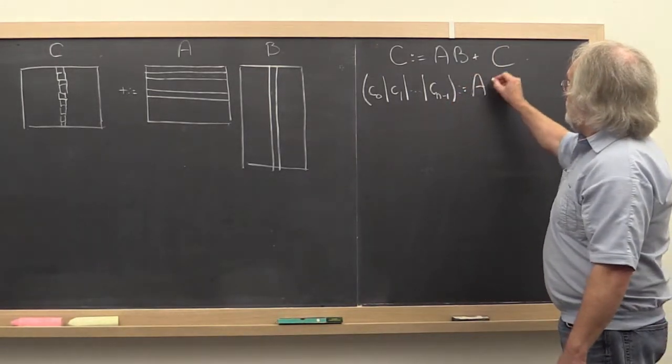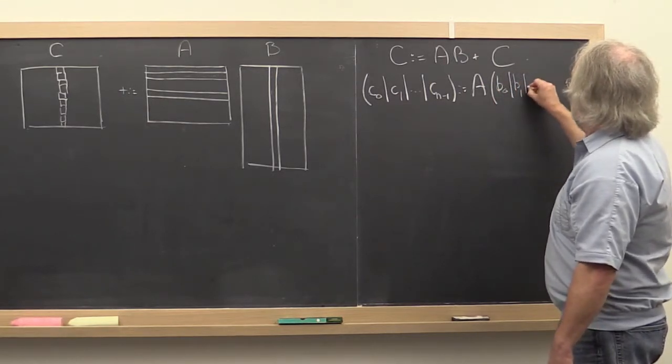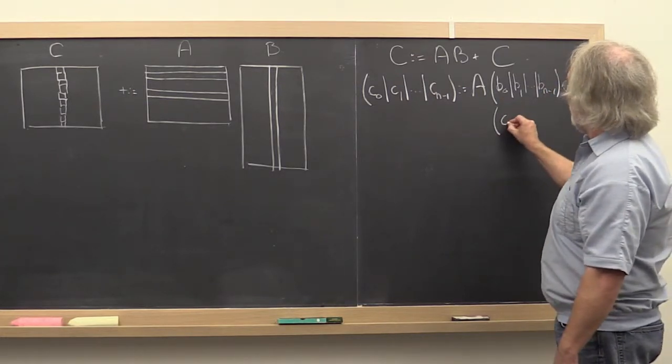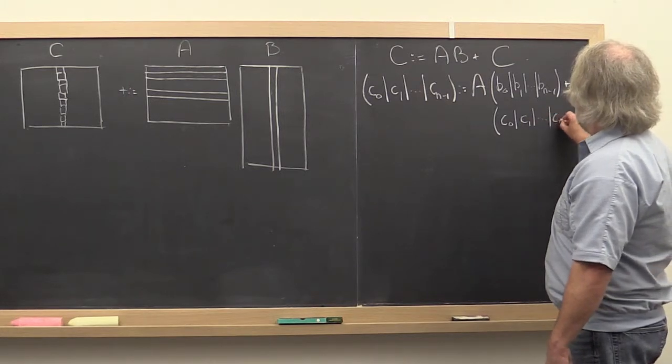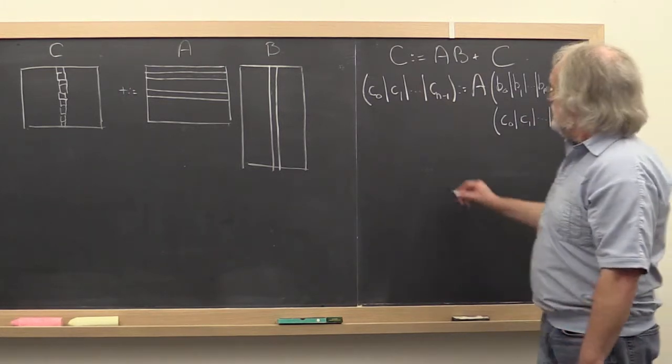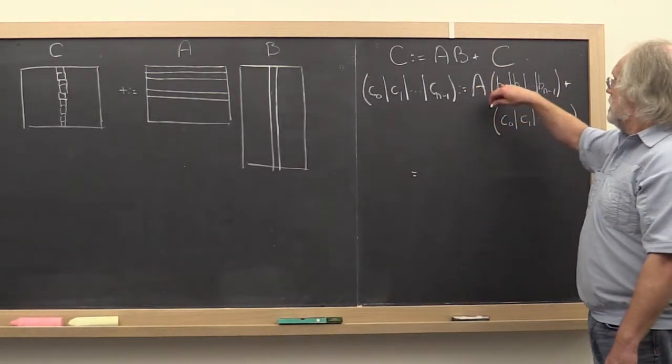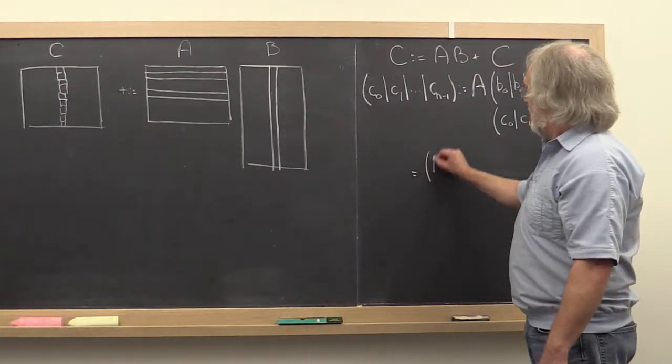We would do the same thing for B. And that has to be added to the columns of C again. And what you then recognize is that A times matrix B but viewed by columns is the same as A times the first column, which must be added to the first column of C.